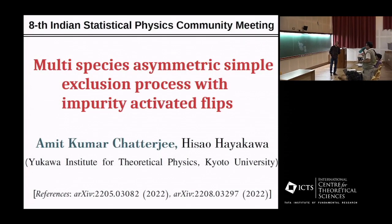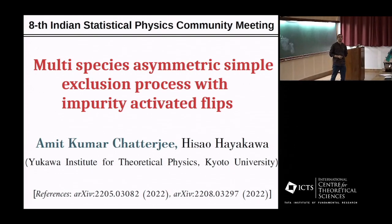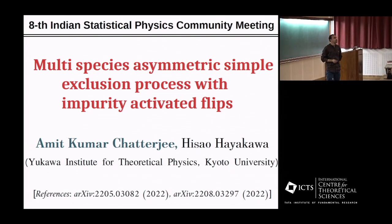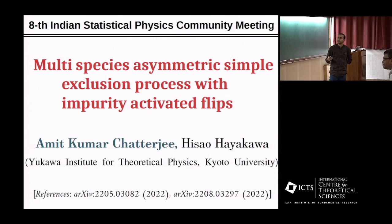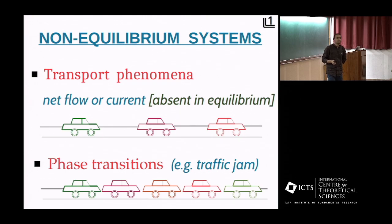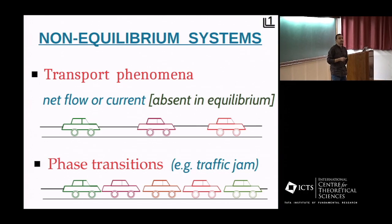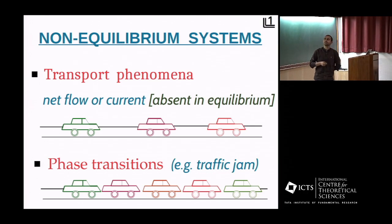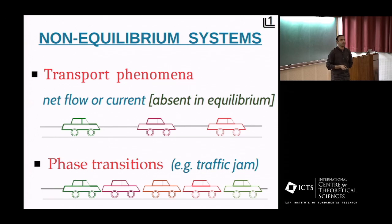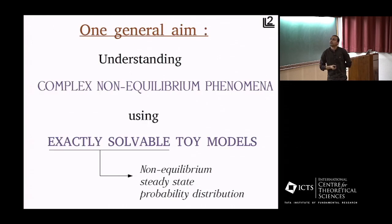Today I'll be talking about multi-species asymmetric simple exclusion process with impurity-activated flips. This work has been jointly done with Professor Hayakawa at Kyoto University. Let us start with some features of the non-equilibrium system. One of the main characteristics that differentiates non-equilibrium systems from their equilibrium counterparts is the existence of net flow or current, which gives rise to the broad area of transport phenomena — ubiquitous from microscopic cellular processes to macroscopic traffic. Non-equilibrium systems also exhibit interesting phase transitions, for example jamming in granular materials, phase separations in active matter systems, traffic jams, and so on.